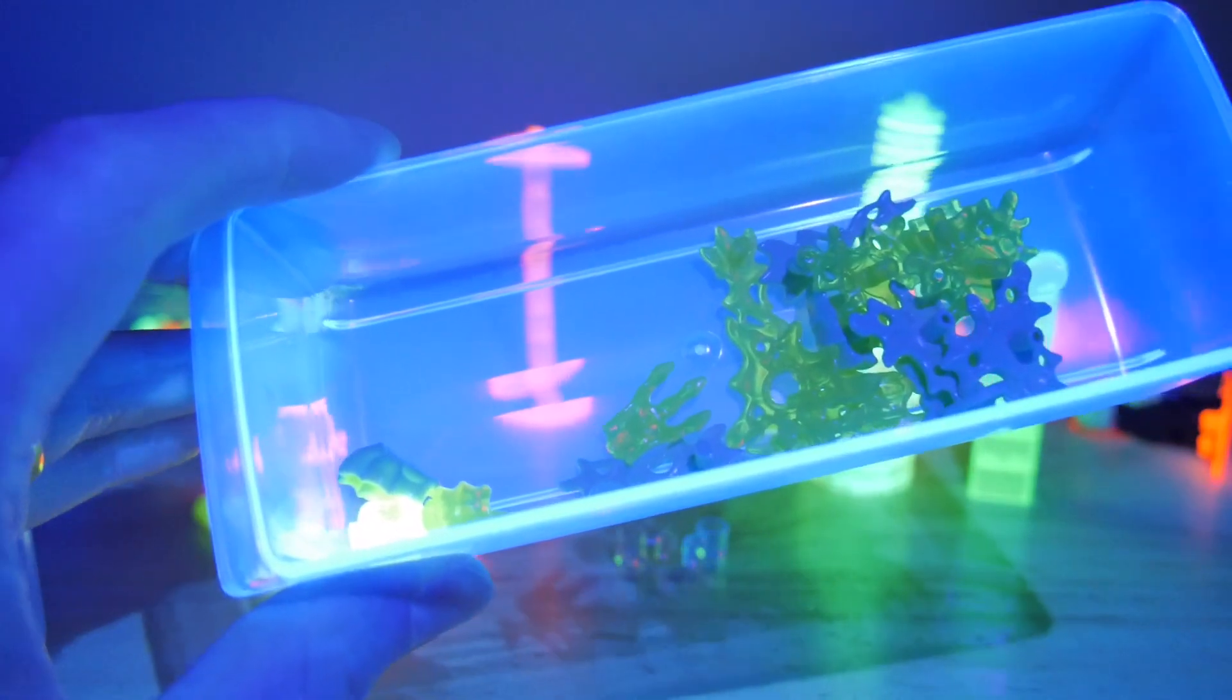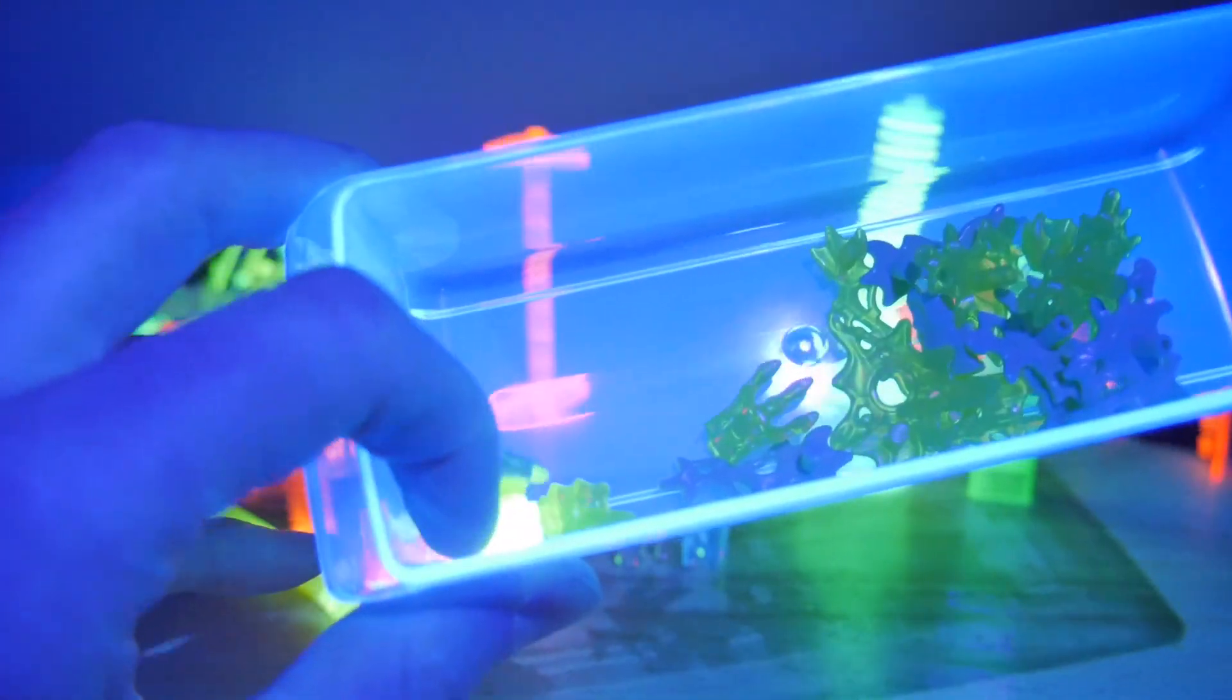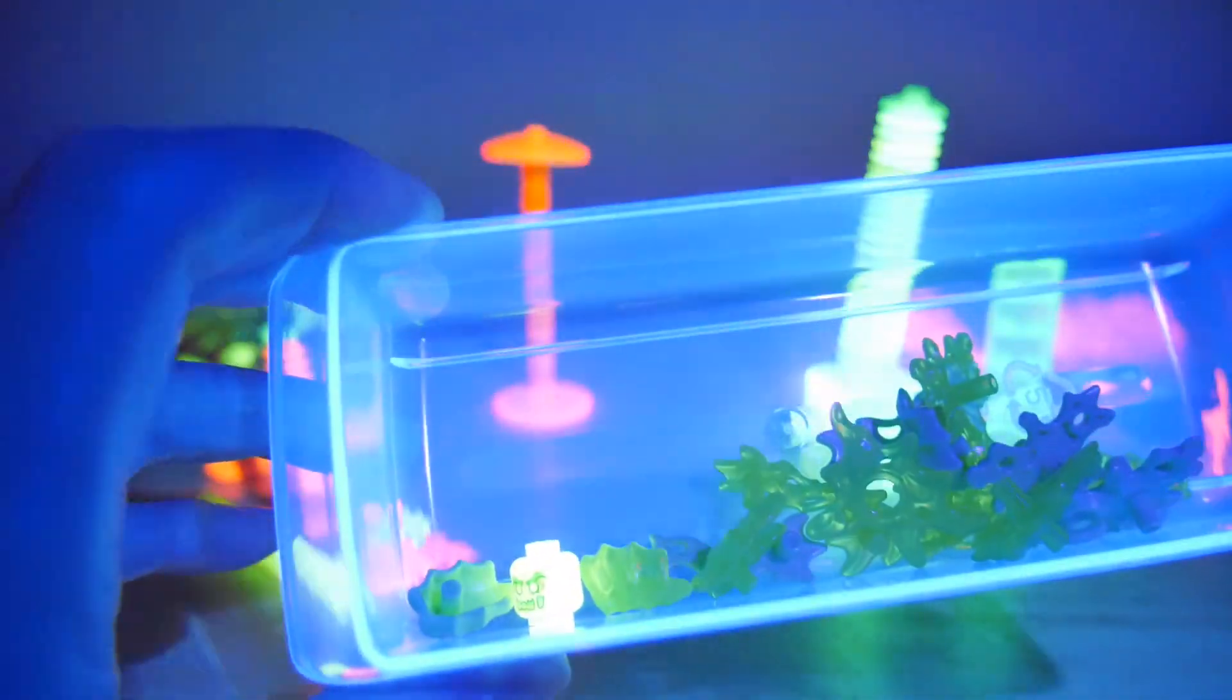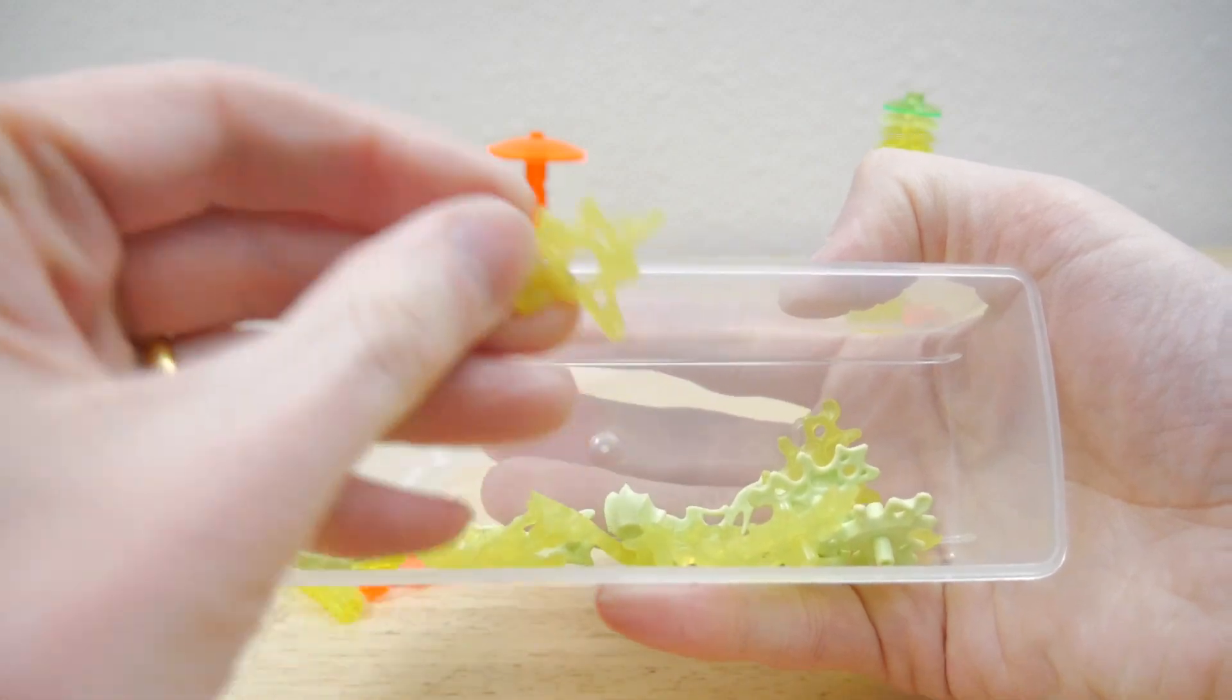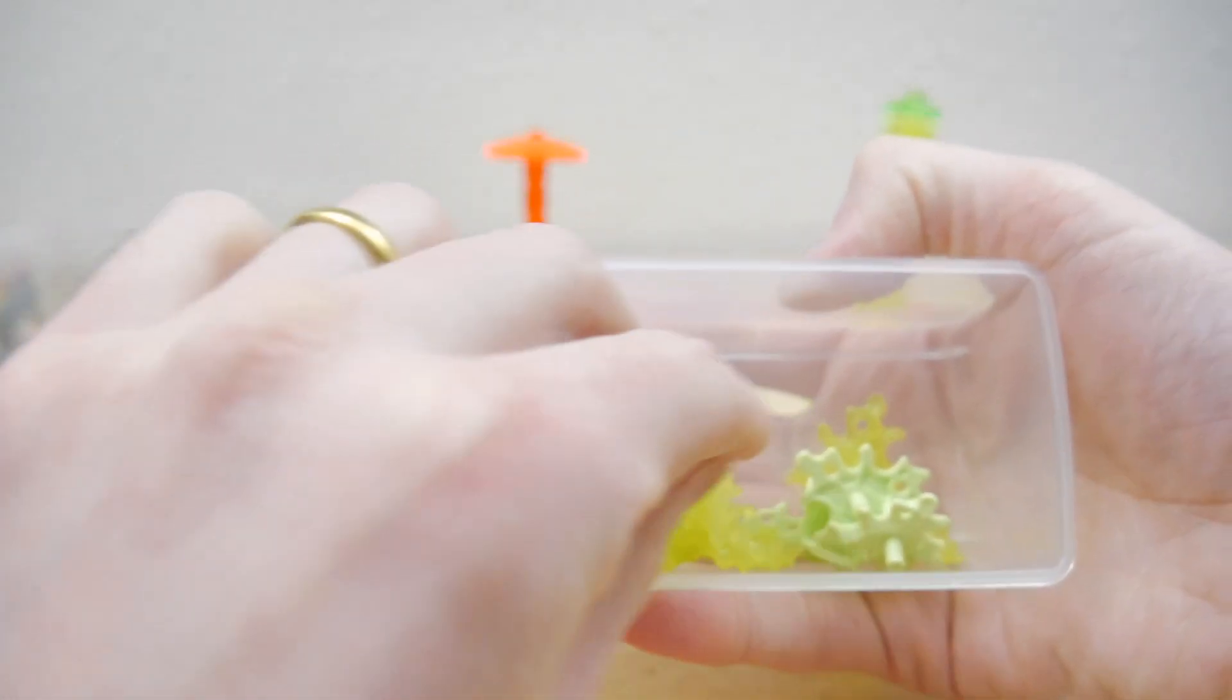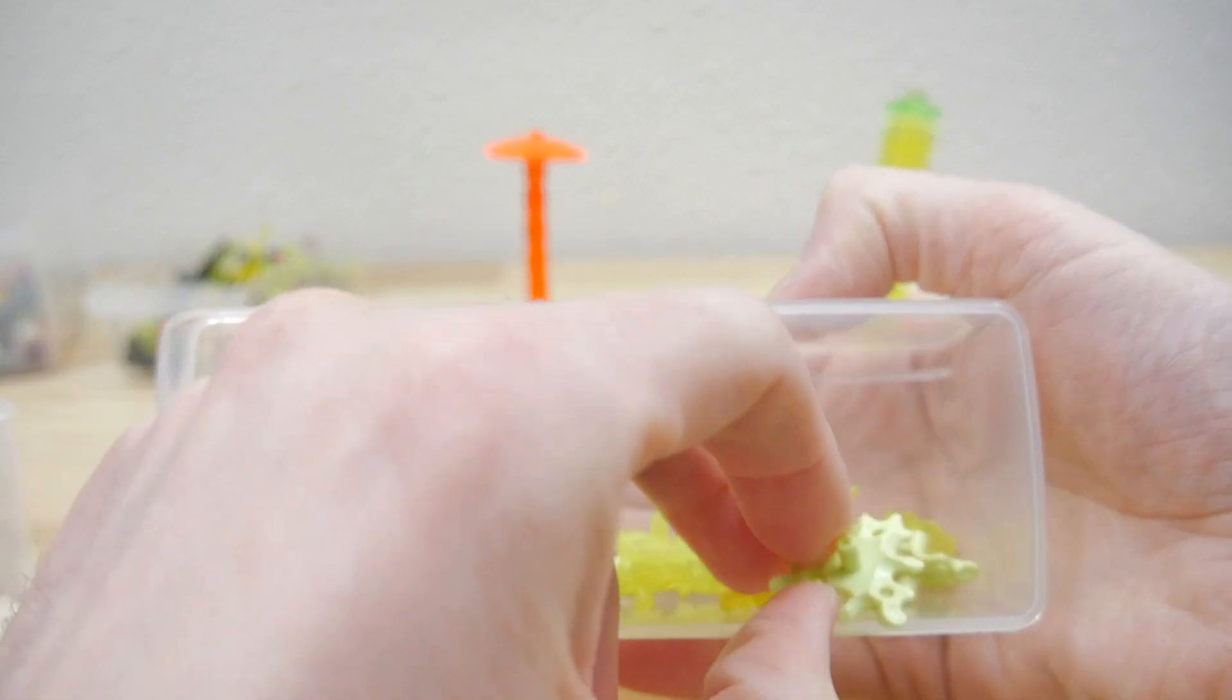So here's some parts from the Hidden Side sets. Now in the bottom left you see a head that glows because that's trans-neon green, but then the rest of them don't. So these kind of splat pieces that are used for the ghostly ectoplasm, there's a transparent version and then there's this light green version as well.